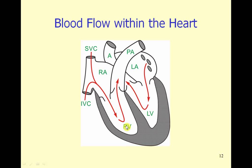At the same time that is occurring, blood is entering the left atrium from the pulmonary veins; it passes through the mitral valve into the left ventricle. After both the right and the left ventricle are filled with blood, they are able to contract when stimulated electrically. The blood flow from the right ventricle will pass through the pulmonic valve into the pulmonary artery to perfuse the lungs. And on the left side of the heart, when the left ventricle contracts, the blood passes through the aortic valve into the aorta from where it is distributed throughout the body.